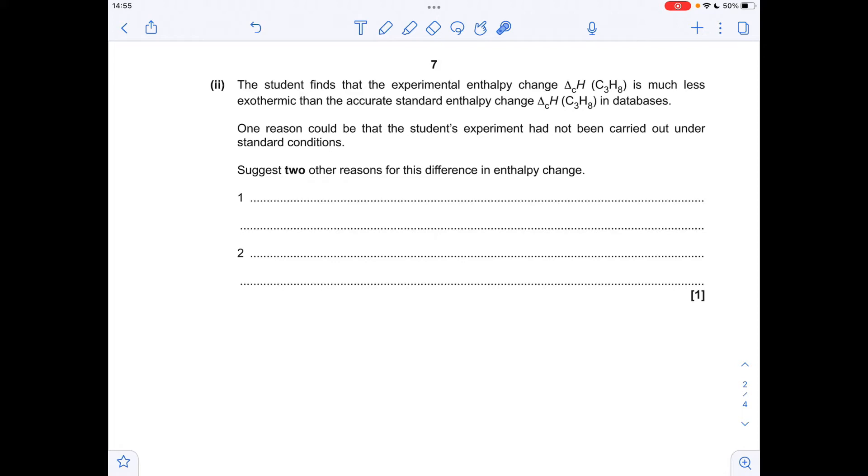Moving on to the next part of the question, suggest two reasons for the difference in the enthalpy change from the student's experimental value compared to the database value. I've gone for these two: heat loss to the surroundings and the incomplete combustion of the propane. And I guess another one you could have gone for would be the evaporation of water from the beaker.